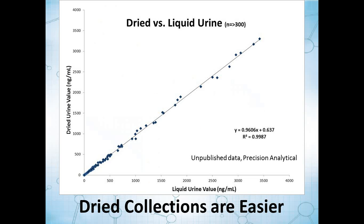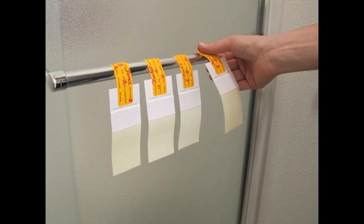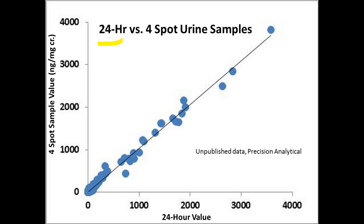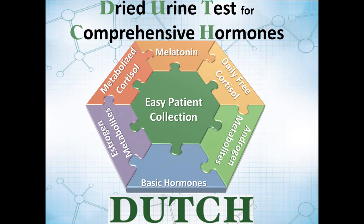To make collection easier, we use a dried collection. The correlation to liquid collection is very strong, so we're not compromising accuracy but the test is much easier. Patients saturate the filter paper on the collection devices one, two, three, and four times throughout the day — timing set to parallel what you'd normally get in saliva. They hang the filter paper to dry for 24 hours and send it back to the lab. We test cortisol from individual samples to give the diurnal free cortisol pattern, and combine them to get excellent correlation to a traditional 24-hour urine test.